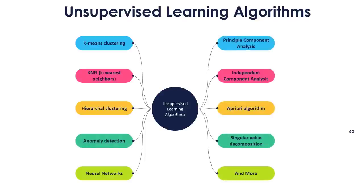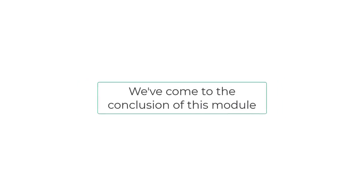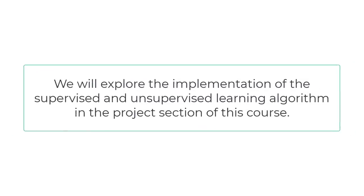Popular algorithms for unsupervised learning include: K-Means Clustering, K-NN (K-Nearest Neighbors), Hierarchical Clustering, Anomaly Detection, Neural Networks, Principal Component Analysis, Independent Component Analysis, A Priori Algorithm, and Singular Value Decomposition. We've come to the conclusion of this module. You have learned everything you need to know about machine learning concepts. We will explore the implementation of the supervised and unsupervised learning algorithms in the project section of this course.